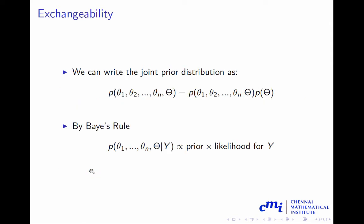We can write the joint prior distribution of theta_1, theta_2, ..., theta_n and capital theta as p(theta_1, theta_2, ..., theta_n | Theta) times p(Theta). Then by Bayes' rule, we can use the Bayes' rule: this joint prior p(theta_1, theta_2, ..., theta_n, Theta | y) is proportional to the prior times likelihood of y. You plug in this prior, and then you can plug this entire thing here. So you take this entire thing times the likelihood, which will give you at least the posterior kernel—the kernel of the posterior you are looking for.